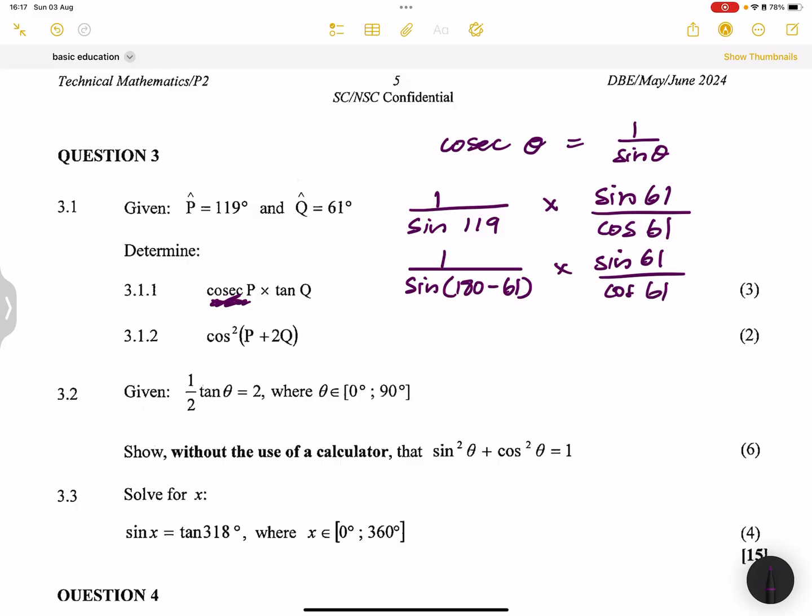So if I look at this, if we use rather our trig ratios or rather our cast diagram, we know that 180 minus that's in the second quadrant, sine is positive there. So this actually just simply becomes one over the sine of 61. This is multiplied by sine of 61 over cos 61. And look at this ladies and gents, we can cancel out sine 61 over sine 61 there.